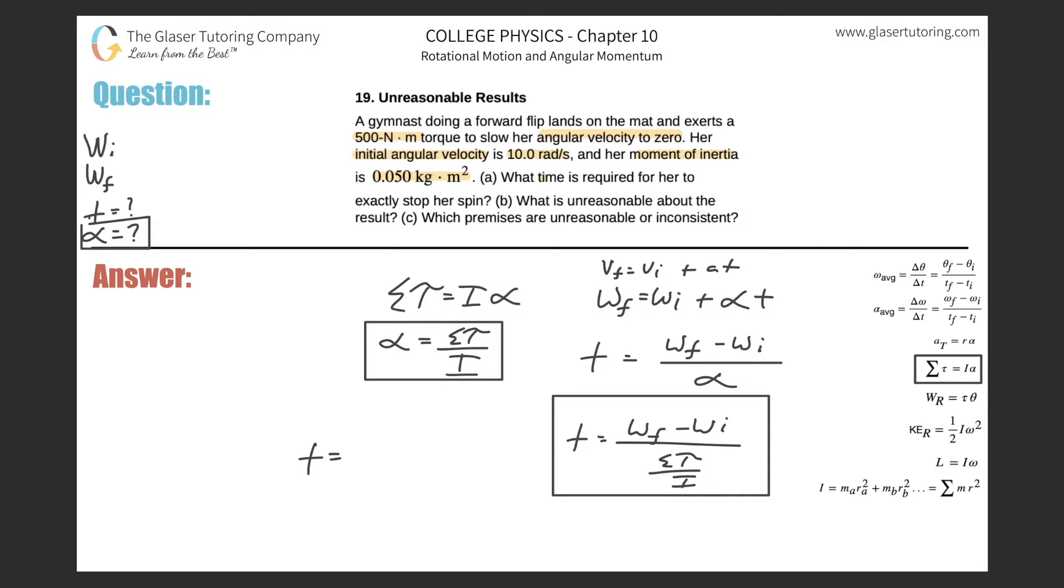So the final angular velocity will be zero, minus the initial - they told us it was 10 radians per second - divided by the torque, they said it was 500 newton-meters, divided by the moment of inertia of 0.05 kilogram meter squared.